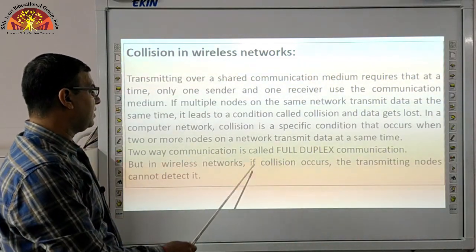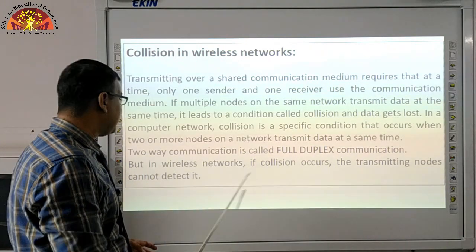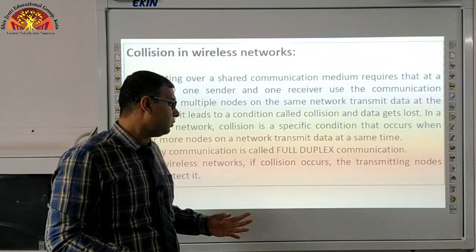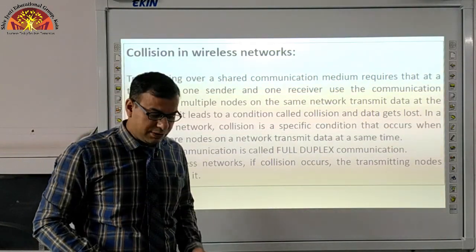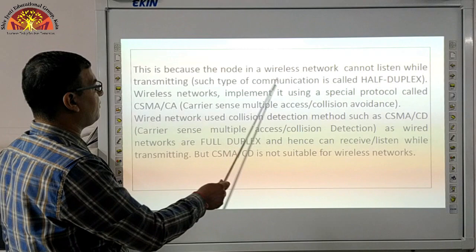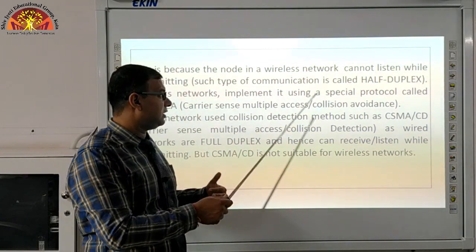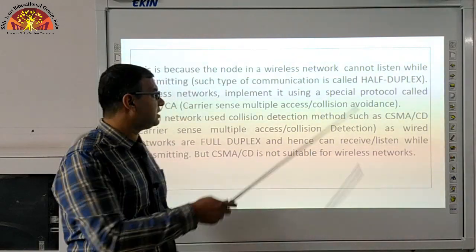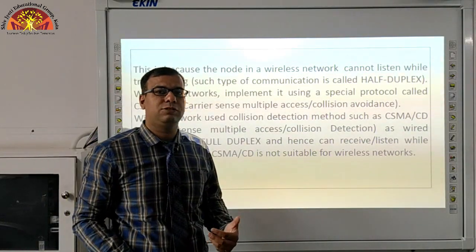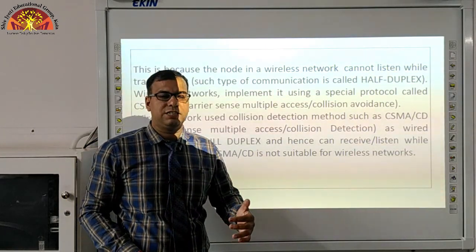But in a wireless network, if a collision occurs, the transmitting node cannot detect it. In a wired network, collision does not happen, but in a wireless network collision can occur, and the node cannot detect it. Collision, if it happens, cannot be detected in wireless technology. To overcome this, wireless networks implement a special protocol called CSMA/CA. The full form of CSMA/CA is Carrier Sense Multiple Access and Collision Avoidance.